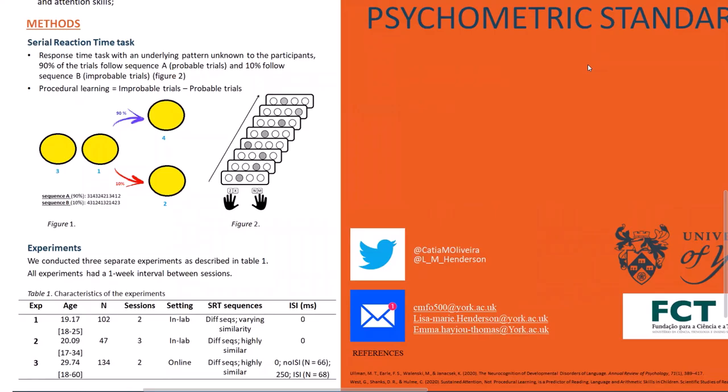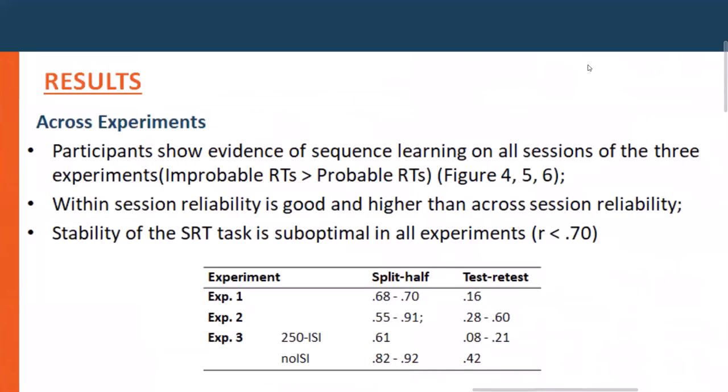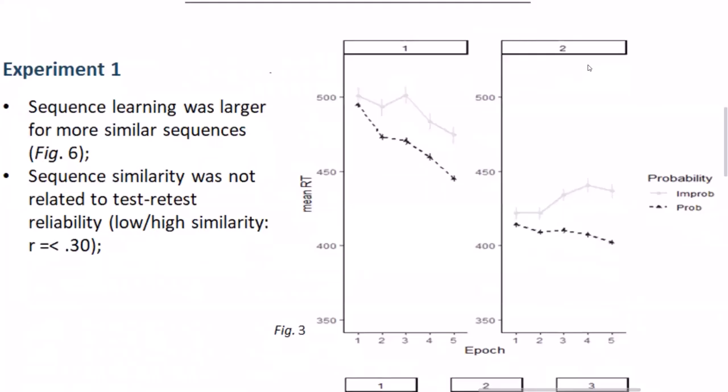Adult participants were used in all experiments, with more detail on the sample characteristics on the poster. Across the experiments, there was a consistent procedural learning effect with response times being faster for probable than improbable trials. The within-session reliability, also referred to as split-half reliability, was also good across experiments. However, the same cannot be said for the across-session reliability, also referred to as stability, which was always below the desired threshold of 0.70.